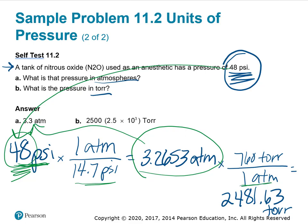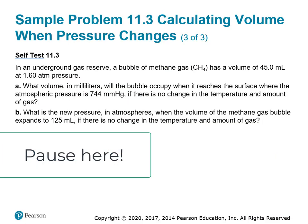Now going to torr from atmospheres, one atmosphere equals 760 torr. I used my unrounded number, 3.2653 times 760, and got 2,481.63. We want two significant figures, so that 8 rounds the 4 up to 5, giving 2,500 torr, or in scientific notation. Pause here to read your problem and answer parts A and B.